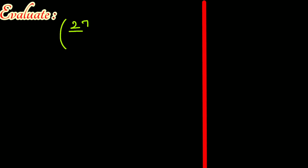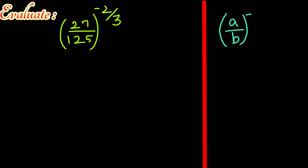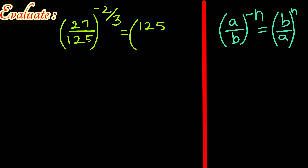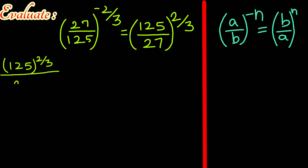Evaluate 27 over 125, the whole to the power negative 2 over 3. We have a negative power, so let us convert the negative power to positive by interchanging the numerator and denominator: 125 divided by 27, to the power 2 over 3. Let's split the powers to the numerator and the denominator. We have 125 to the power 2 over 3 divided by 27 to the power 2 over 3.